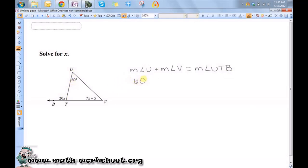U is 60 degrees, V is 7X plus 5, and this is 20X.